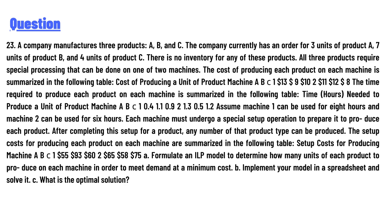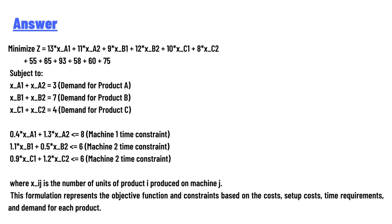Part (a): Formulate an ILP model to determine how many units of each product to produce on each machine in order to meet demand at minimum cost. Part (b): Implement your model in a spreadsheet and solve it. Part (c): What is the optimal solution? Please pause the video and go through the calculation.